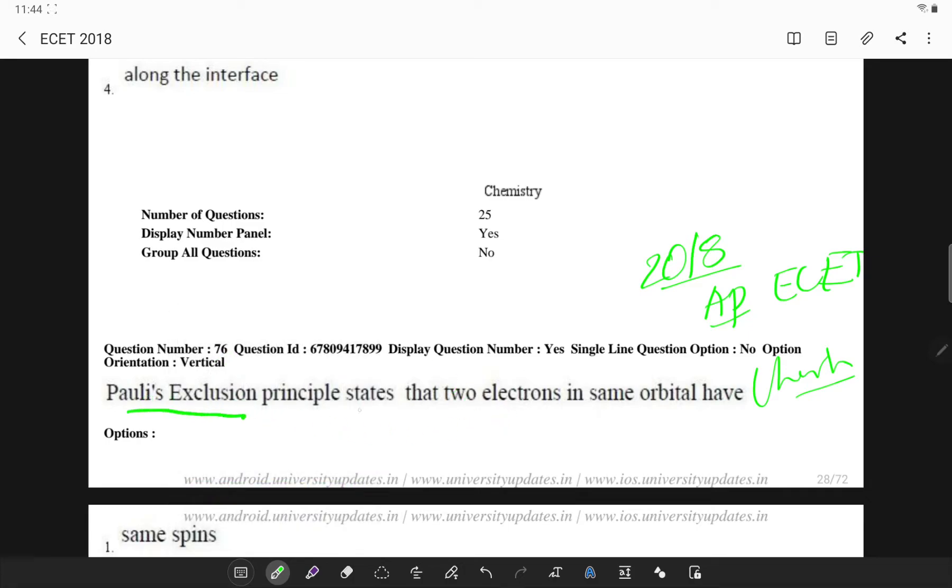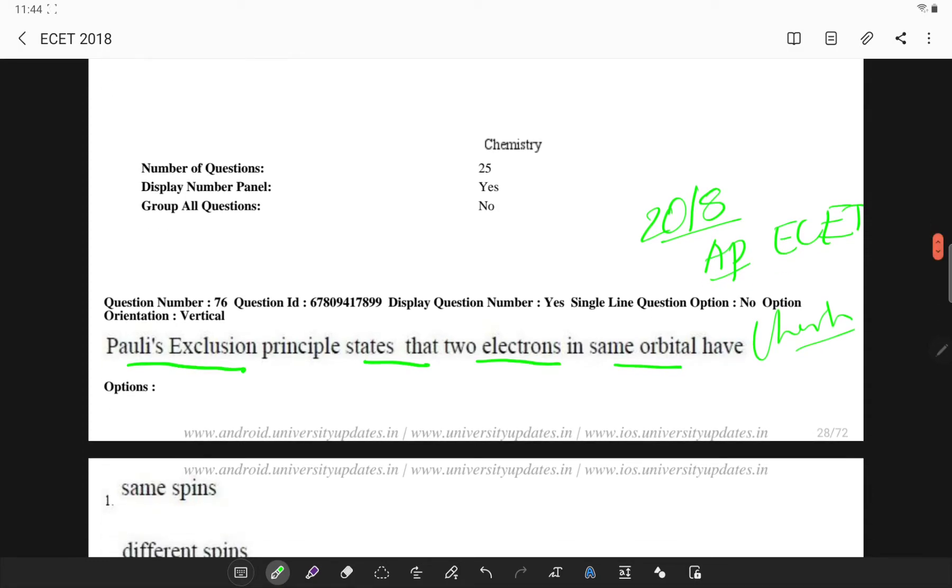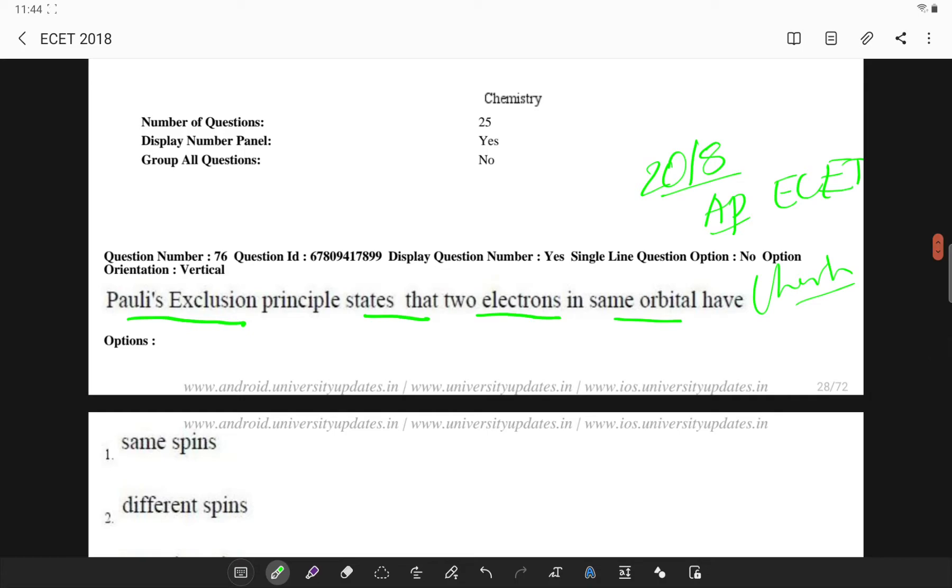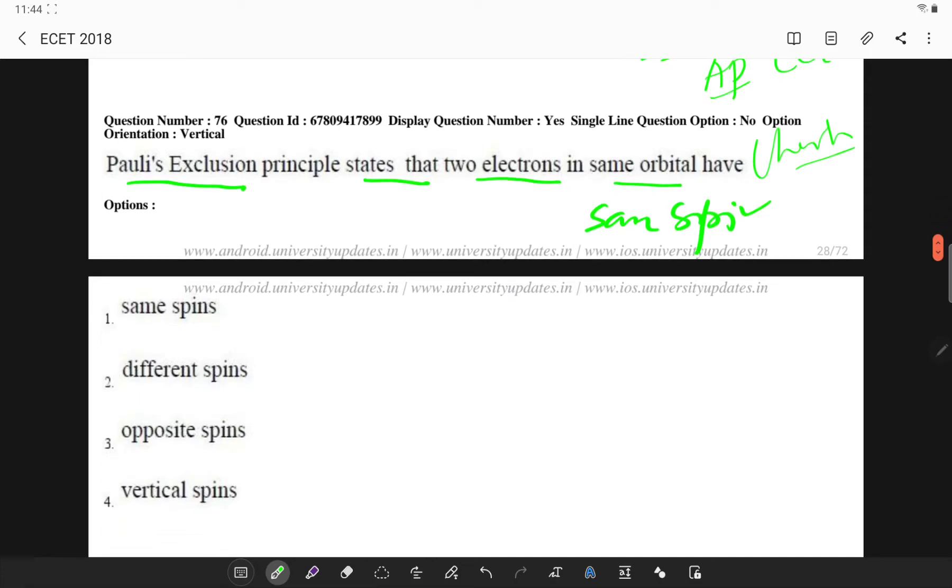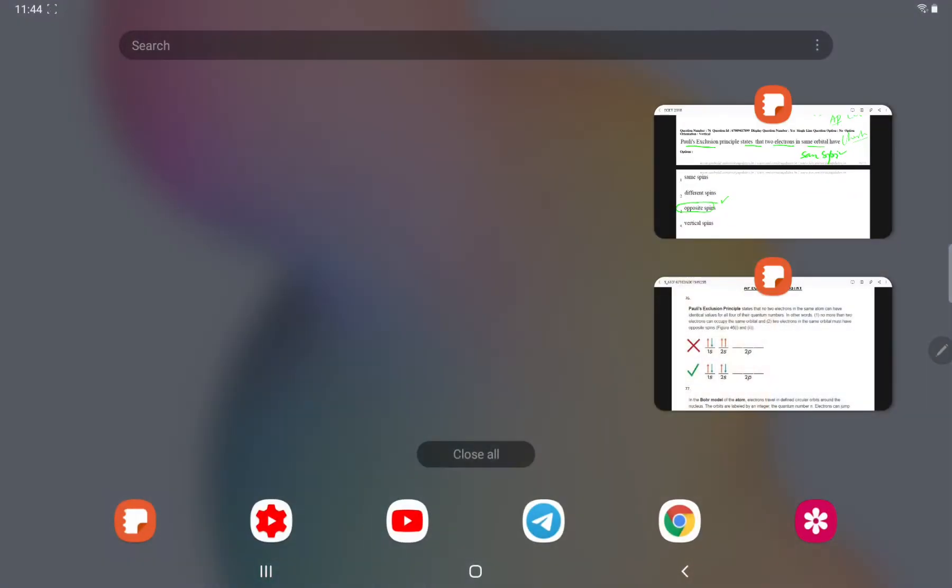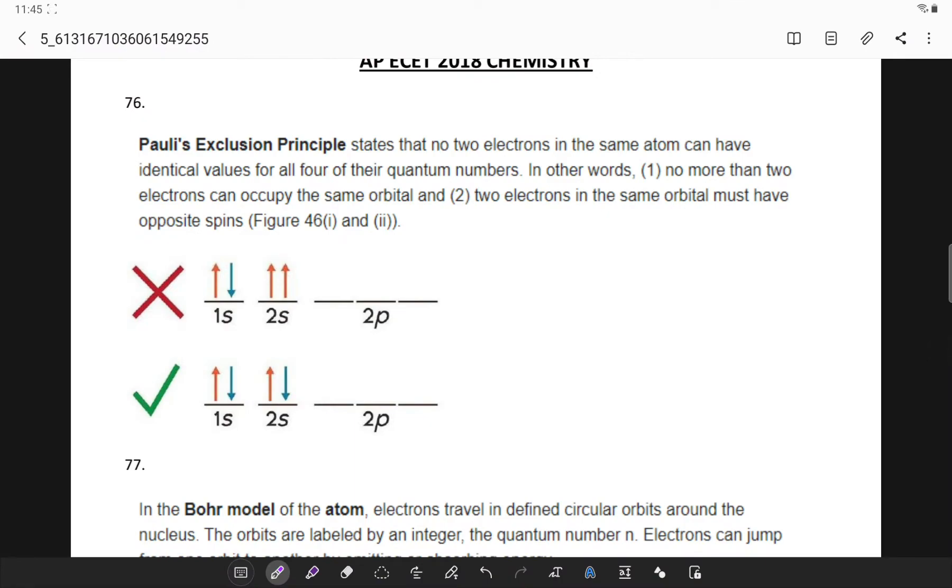What's the first question? Pauli's exclusion principle states that two electrons in the same orbital... So no two electrons in the same orbital can have the same spin. So the answer here is opposite spins. So I'll explain why.